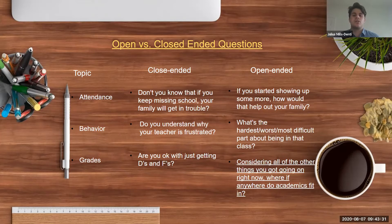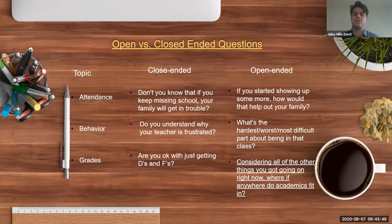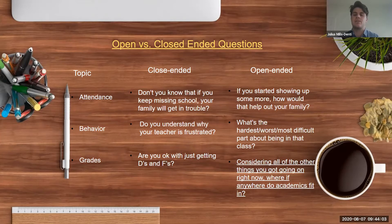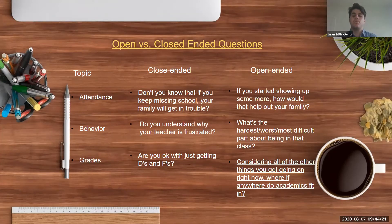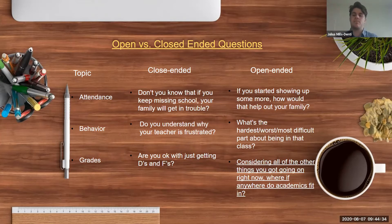Let's talk open versus closed-ended questions. These are real-life examples from this year. On attendance: 'Don't you know that if you keep missing school, your family will get into trouble?' — I've heard some version of that from administrators to students many times. It's rhetorical and puts the kid in a position where they can only defend themselves or give a short answer. You fall into a question-answer trap that's more investigative than interpersonal. Instead, try: 'If you started showing up more, how would that help out your family?' — a discrepancy-related question that allows wiggle room and can lead the student toward insight about possible change.